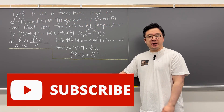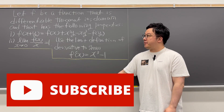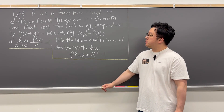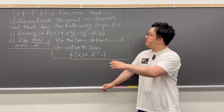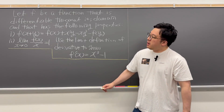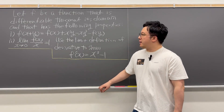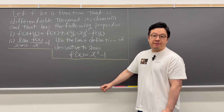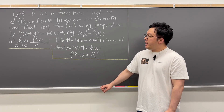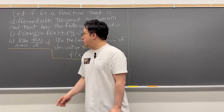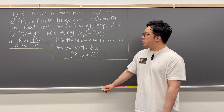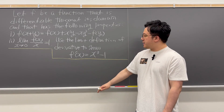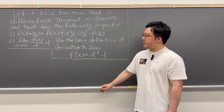This is a pretty interesting question about the limit definition of derivative. Let f be a function that is differentiable throughout its domain and has the following properties. Number one, f of x plus y is equal to f of x plus x cubed y minus x y cubed minus f of y. And second, the limit when x is going to zero of f of x over x is equal to 1. Use the limit definition of derivative to show f prime of x is x cubed minus 1.